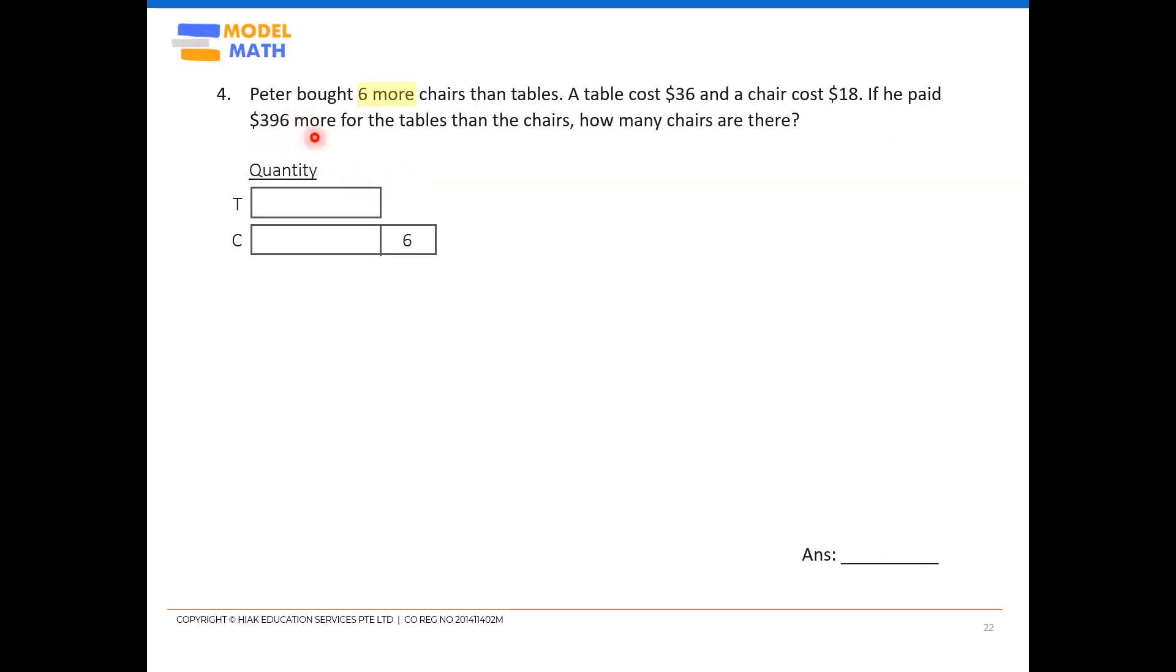Now, and also since I have another value here, another value difference here, $396 more, that's also a difference. Okay, just that way is the cost difference. So since it's a cost difference, we call that the total value model. Okay, so to be clearer, I call this total value because there are many more groups. There are many of these tables and chairs that contributes to a difference of $396. Not just simply one table versus one chairs difference. Okay, that's why I just included what total value to be clearer.